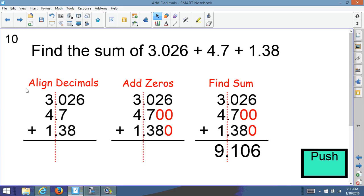So remember, align the decimals first. Get them all in a straight line. Add zeros where necessary. Sometimes you have to add it on the left side of the decimal as well as the right. And then add up your numbers as you normally would do. So there's our answer, 9.106.